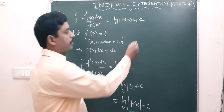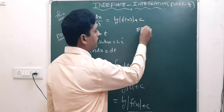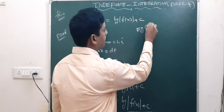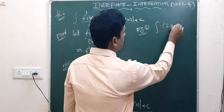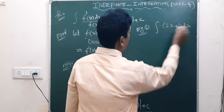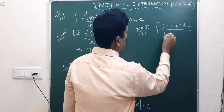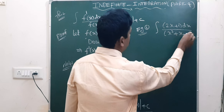Now based on this theorem, one example: integral of (2x+1) dx by (x² + x + 5).